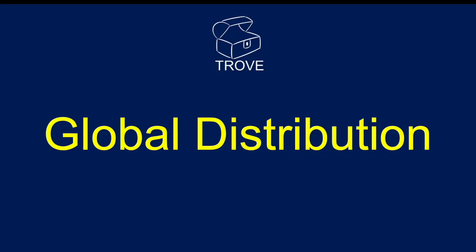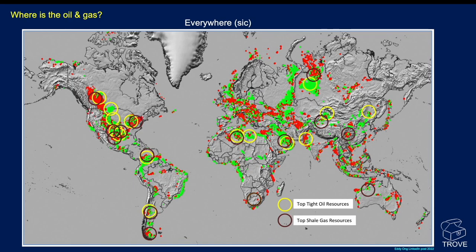If we look at the global distribution of source rocks, one way to get there is to look at the global distribution of oil and gas. Every red dot and green dot here is showing the distribution of known discoveries or fields throughout the world, and we can see concentrations of those. Eddie Young has highlighted the main tight oil resources and the main shale gas resources in various parts of the planet. Everywhere these occur, we know there is a source rock — there must be.